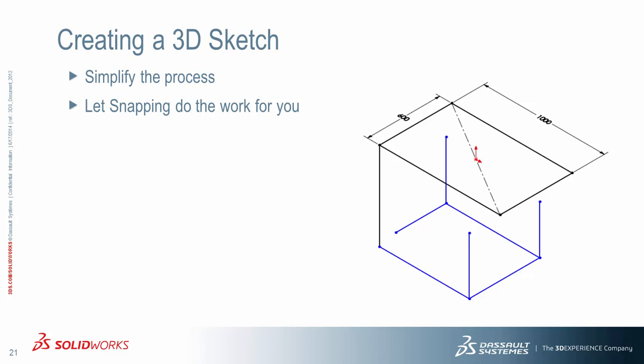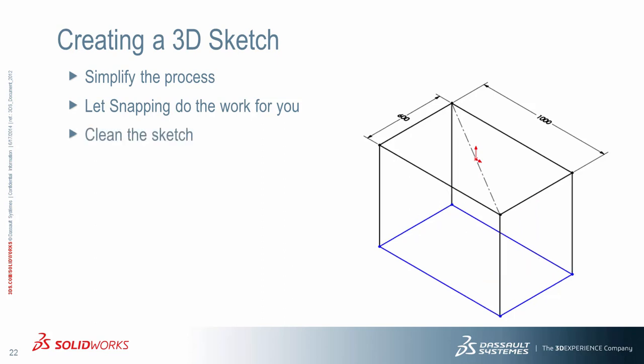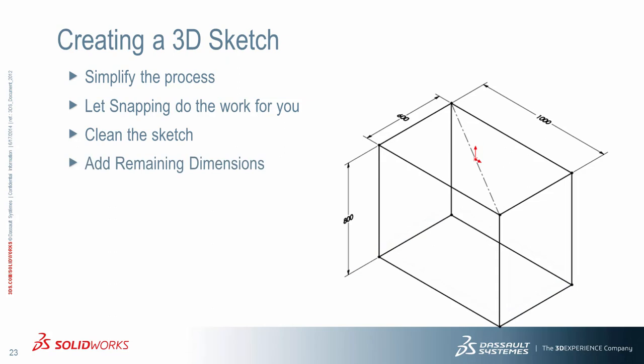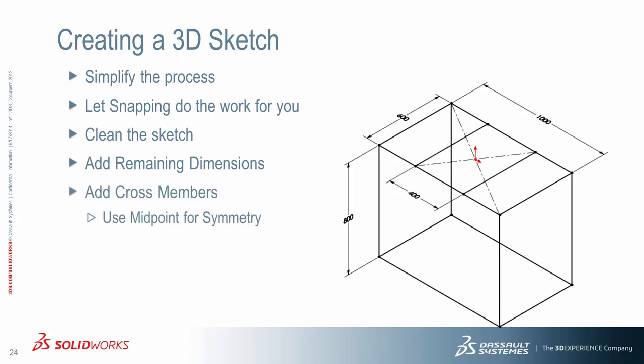If you've used SOLIDWORKS for any length of time, you know that after the fact you can simply drag and drop the endpoints on top of each other and snap them into place. Finally, make sure you add any remaining dimensions so that your sketch is fully defined. 3D sketches can be harder to fully define than 2D sketches, but you still want to make sure all your geometry is black. Make sure the geometry is fully defined and you capture the appropriate design intent — in this case, using a midpoint relationship to maintain symmetry.